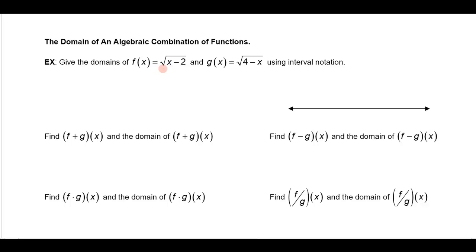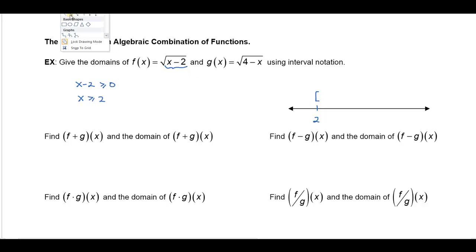The domain of this function is going to be the real number inputs that give real number outputs. So I want to look at this thing under the radical — we call it the radicand — and I know that I can't take square roots of negative numbers. So this x minus 2 under the radical has to be greater than or equal to 0, and then I'll only be taking the square root of something that's non-negative. So I know in this case that x has to be greater than or equal to 2, and so for the function f these are the values that I can plug into it.